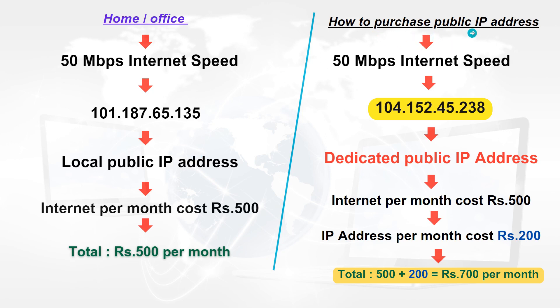How to purchase the public IP address. If you have 50 MBPS in a month, you can use 50 MBPS in a month. If you have a device — you can use a router, firewall, etc. If you have a dedicated public IP address, you can use a device or an office — that means router, firewall, server, or NVR/DVR — you can use a device outside.